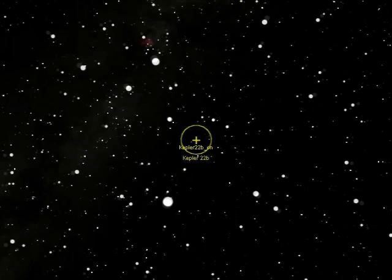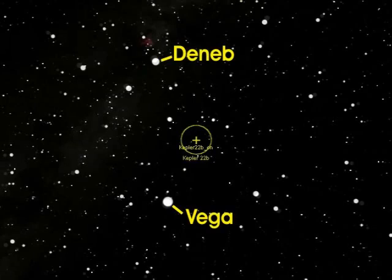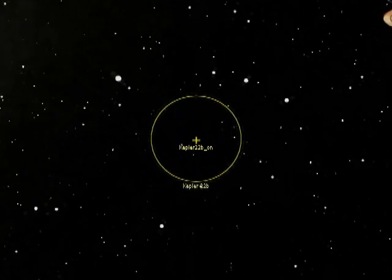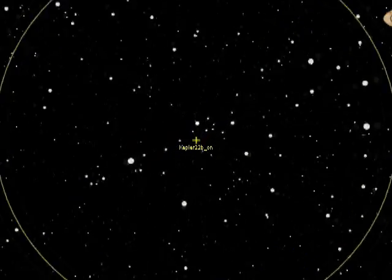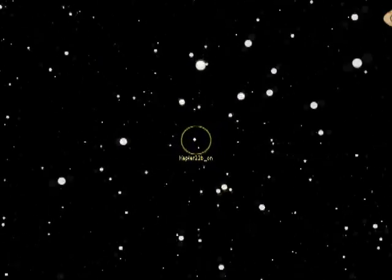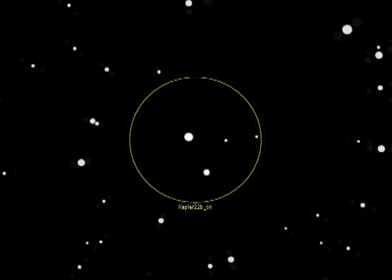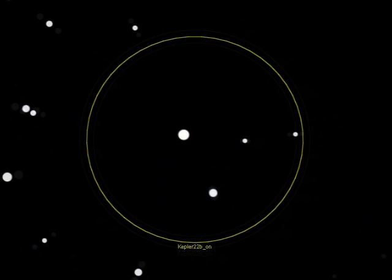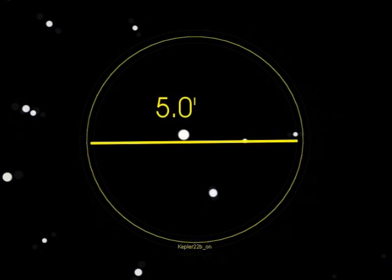Starry Night allows us to zoom in on the location of 22b. This field of view circle is very small, only 5 arc minutes in diameter.